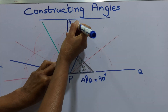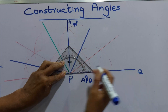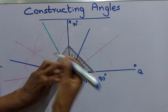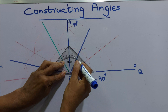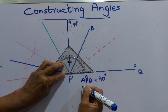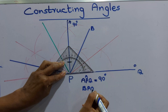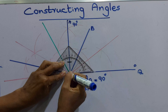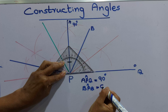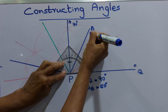Here, each angle will be named. This angle is APQ — angle APQ is 90 degrees, that is a right angle. This angle, going from 0, increases in value. We'll name this as B — angle BPQ shows as 60 degrees.